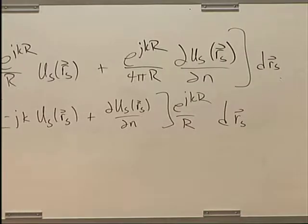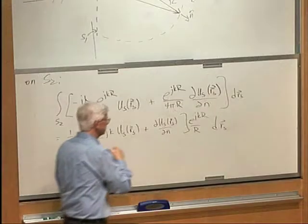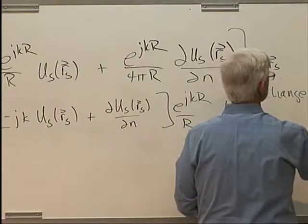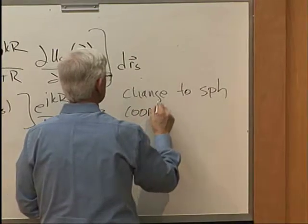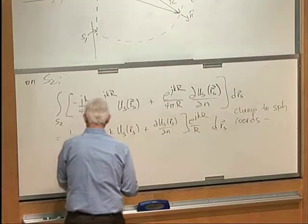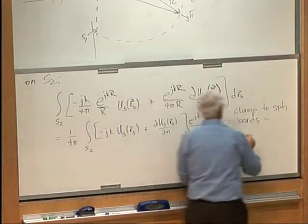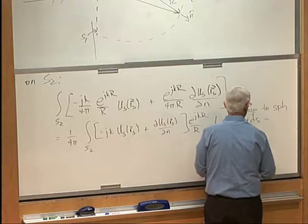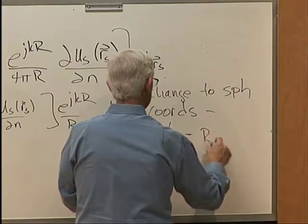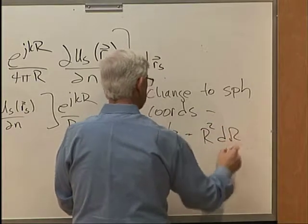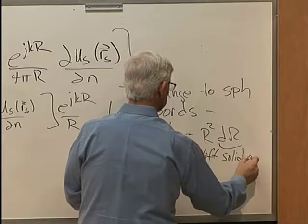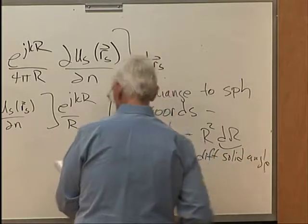Now, we're going to change to spherical coordinates. And, in that case, the dRS term, if we were on a plane, it would be dx, dy, is R squared d omega where this is the differential solid angle.